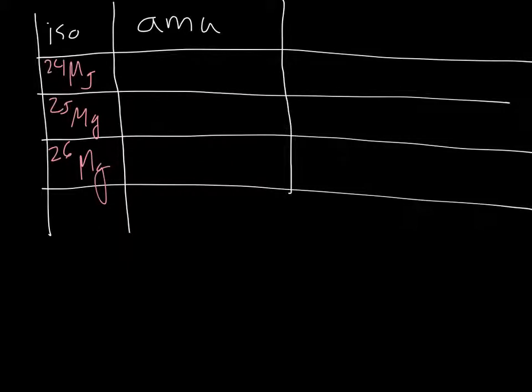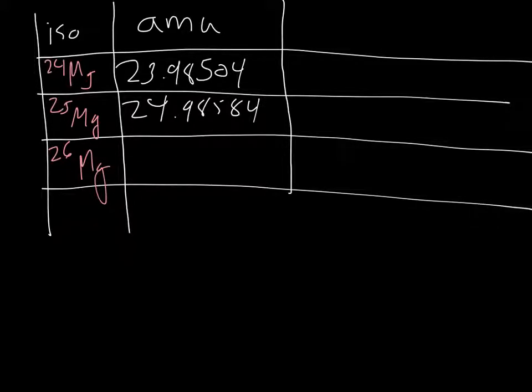I know that 24 Mg has a mass of 23.98504. That 25 is 24.98584, and 26 is 25.98259.